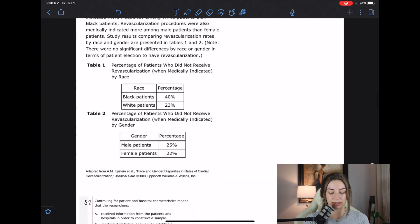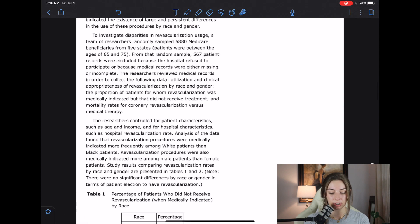And I am so stoked because this is the last passage in the sample test that I will be going over. Let's jump right into it. Okay, it looks like the passage is called race and gender disparities in rates of cardiac revascularization.